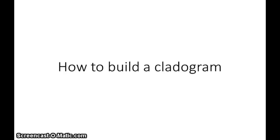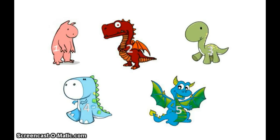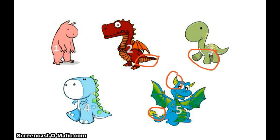How do we build a cladogram? Let's take a look at these organisms. What makes them the same? What makes them different? I see things like tails, horns, spikes, four legs, and wings.